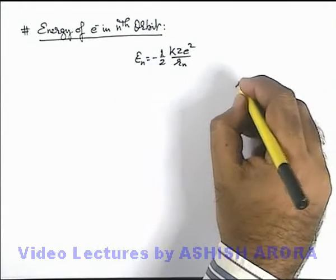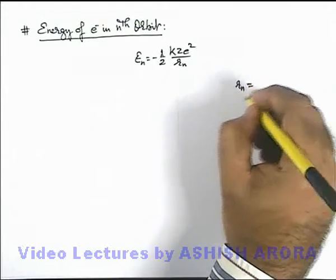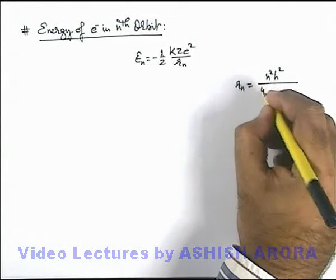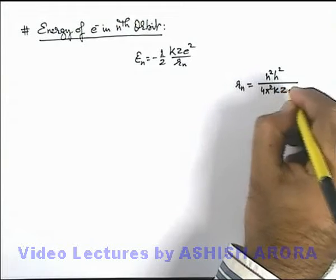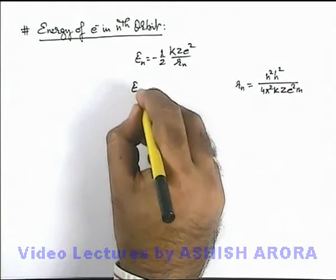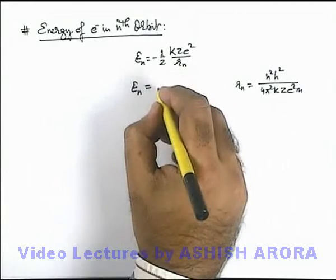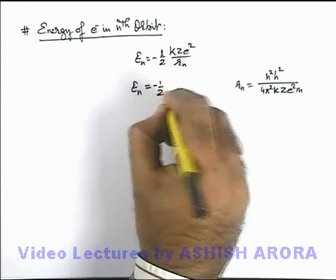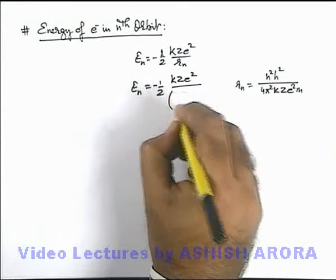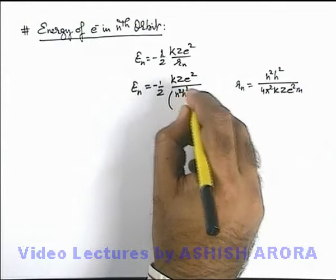If we substitute the value of r_n which we know, the radius of nth orbit is given as n square h square over 4 pi square k z e square m. And on further simplifying we can see the value of E_n we are getting here is minus half k z e square over, I am just substituting the value of r_n which is n square h square by 4 pi square k z e square m.